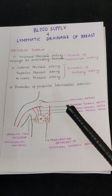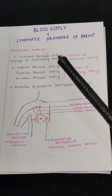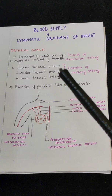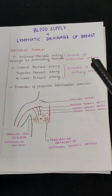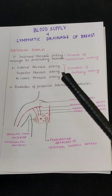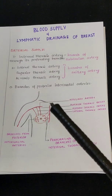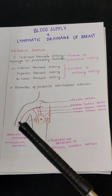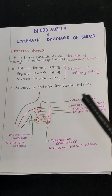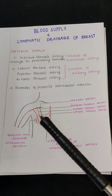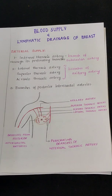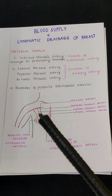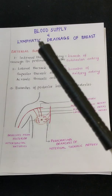The next sources are the lateral thoracic artery, superior thoracic artery, and acromial thoracic artery, which are branches of the axillary artery. These branches of the axillary artery provide arterial supply to the breast. You can see the axillary artery here, with the superior thoracic artery, the acromiorthoracic artery, and the lateral thoracic artery.